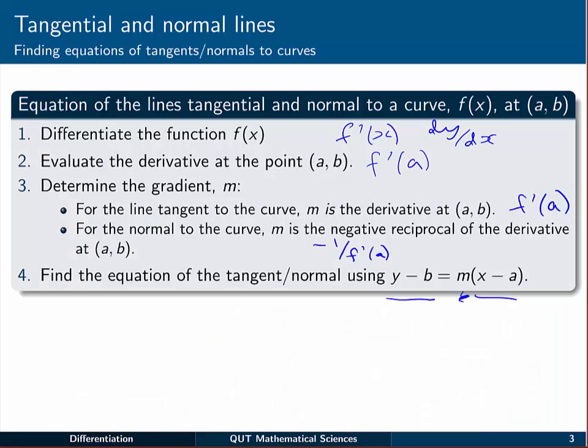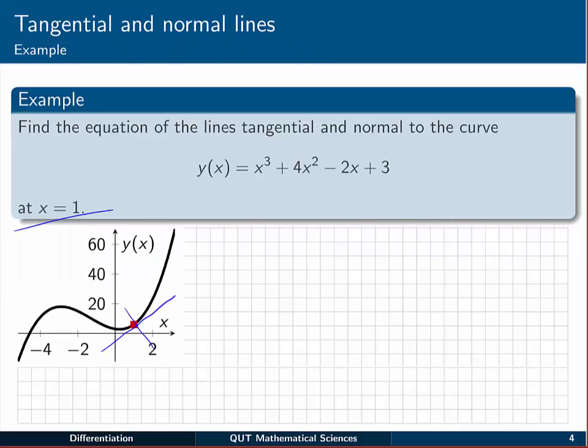Now let's remember what the process was. The first thing to do is to differentiate the function. Here we've got y(x) = x³ and so on. So dy/dx will be 3x² + 4x times 2, which becomes 8x, take away 2 and plus 0.